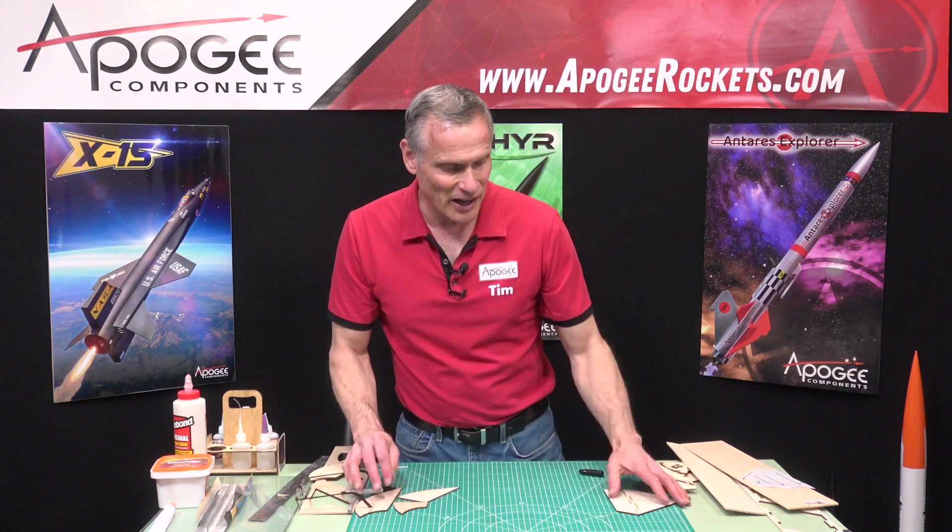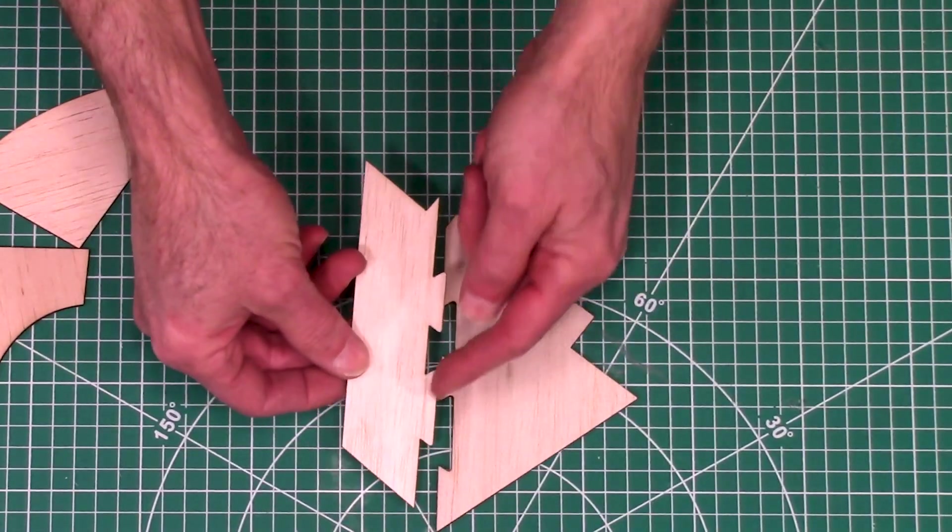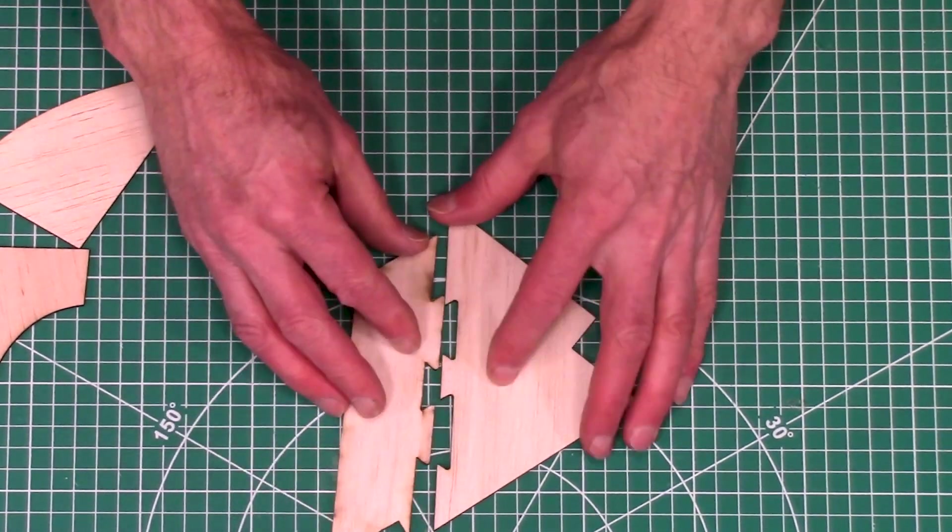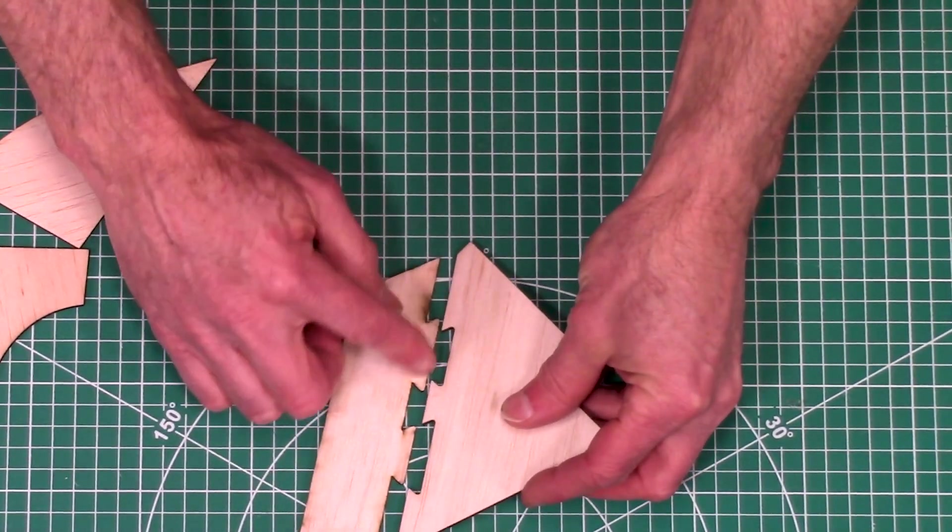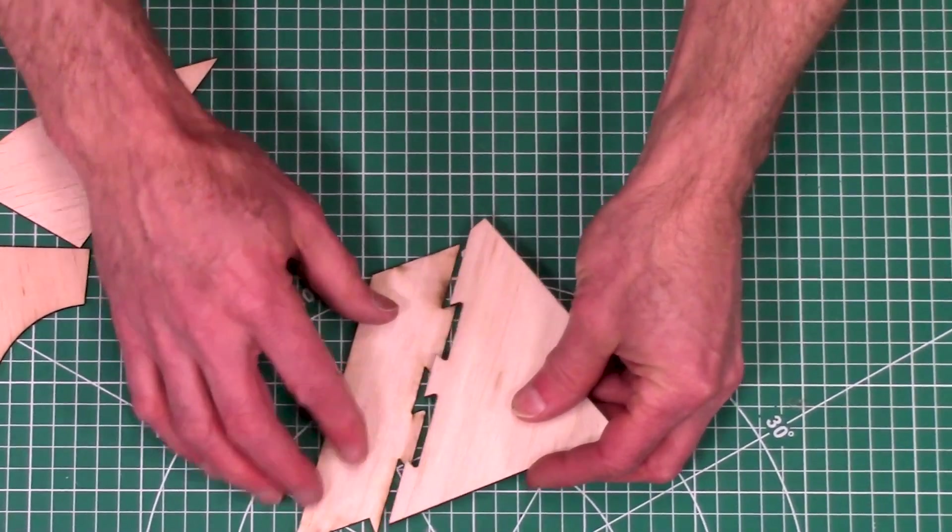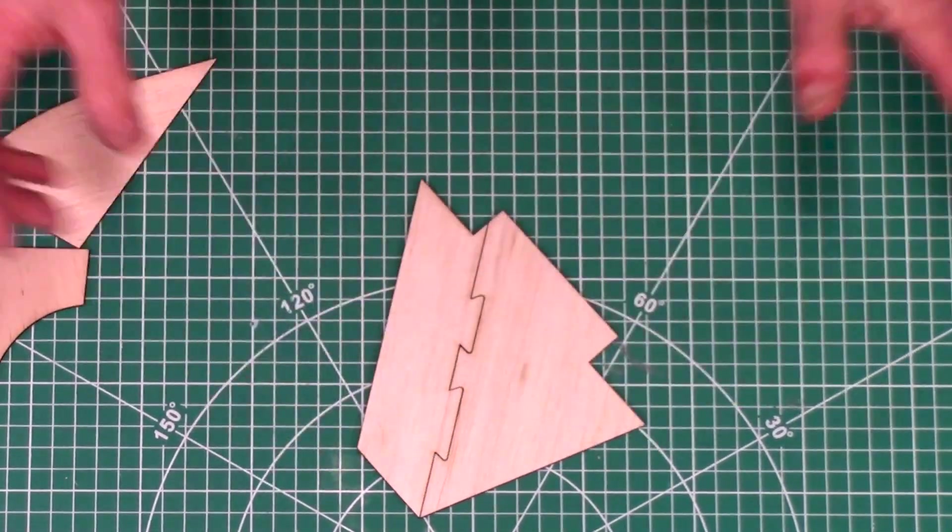And we do the same thing on this fin right here. Like these tabs right here can only go together one way. So if you try to put it together this way, this tab is too big to go into that little jaw right there. So it can only go together one direction, just like that.